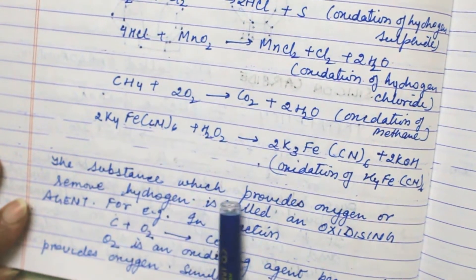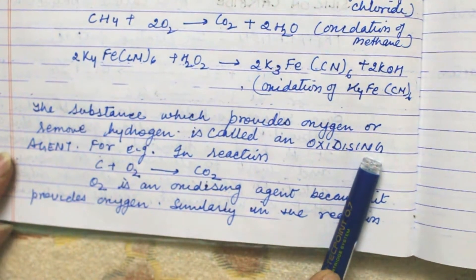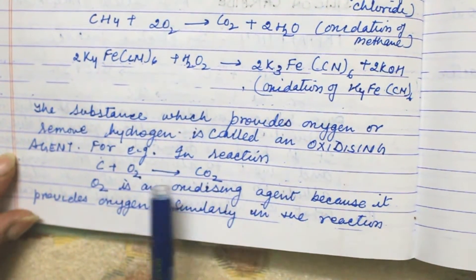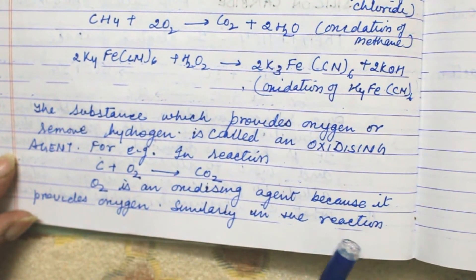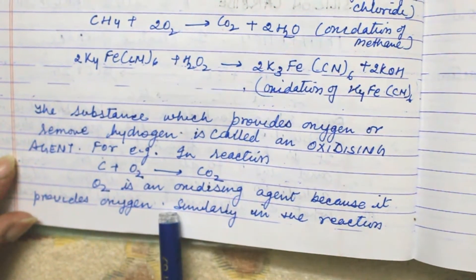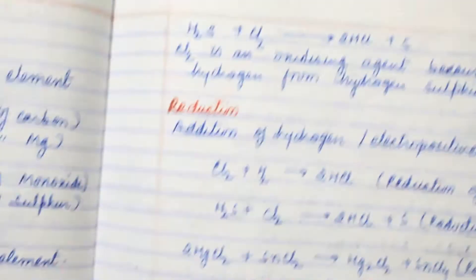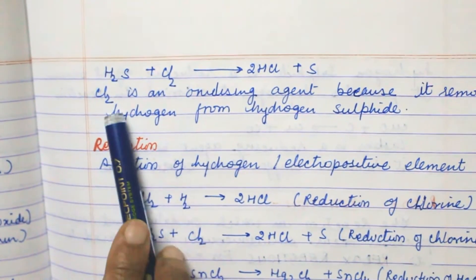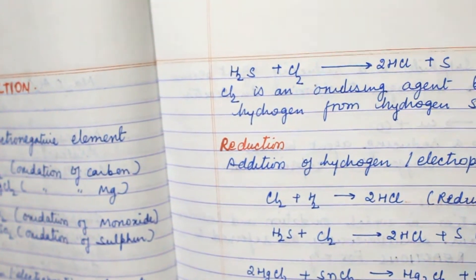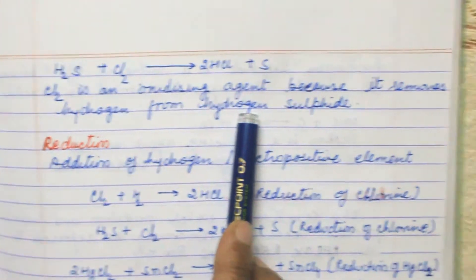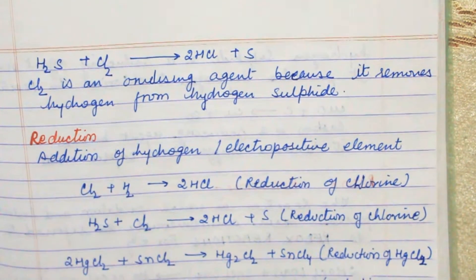The substance which provides oxygen or removes hydrogen is called an oxidizing agent. For example, in this reaction O2 is the oxidizing agent because it provides oxygen to C. Similarly, H2O2 is an oxidizing agent because it removes hydrogen from hydrogen sulfide. That is why it acts as an oxidizing agent.